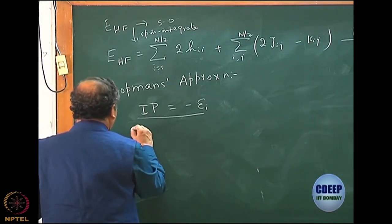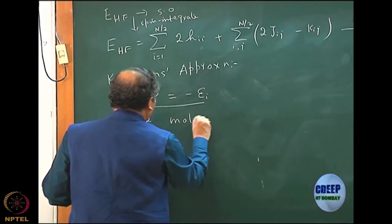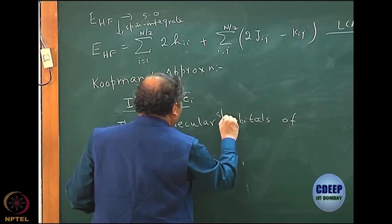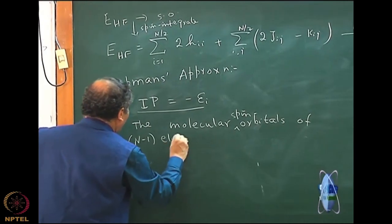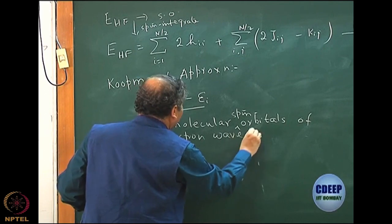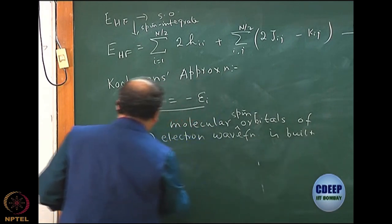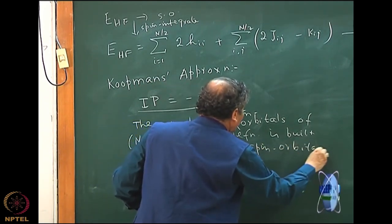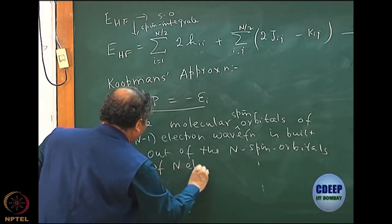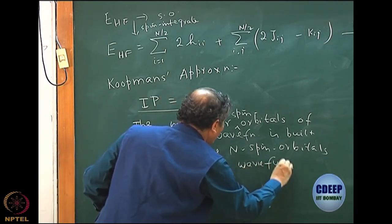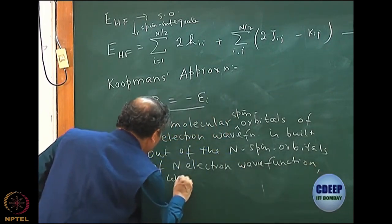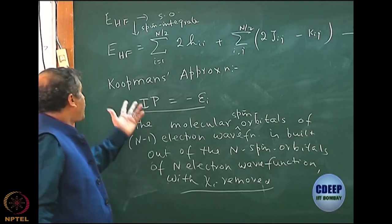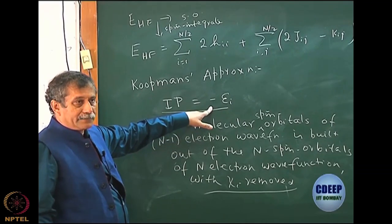The whole approximation was built on the fact that the molecular spin orbitals of the n minus 1 electron wave function are built out of the n electron spin orbitals of the original problem — the n electron wave function — with just the chi i removed.